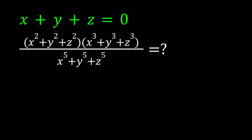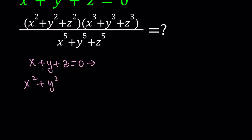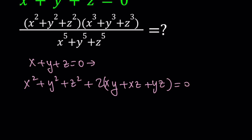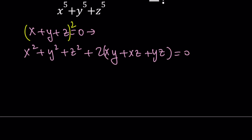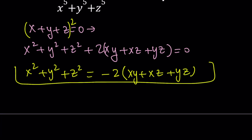I'm going to be doing a lot of algebraic manipulations. If x plus y plus z is equal to 0, I'm going to square both sides. That gives us x squared plus y squared plus z squared plus 2 times the quantity xy plus xz plus yz, all equal to 0. So we can isolate x squared plus y squared plus z squared, and that equals negative 2 times xy plus xz plus yz. We're going to be using this later, so let's save it.